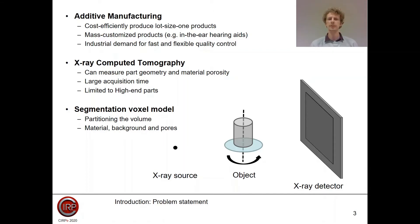There is an industrial demand for very fast and flexible quality control to perform quality control of each part individually. This is where X-ray computed tomography can play a very important role, because it can measure both external and internal features of the part and perform non-destructive quality control of the material to check if there are defects or voids where they can influence the mechanical properties. But one of the main drawbacks of X-ray CT is a very large acquisition time and is therefore limited to high-end parts.